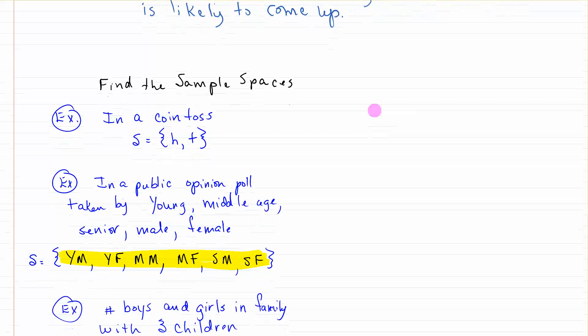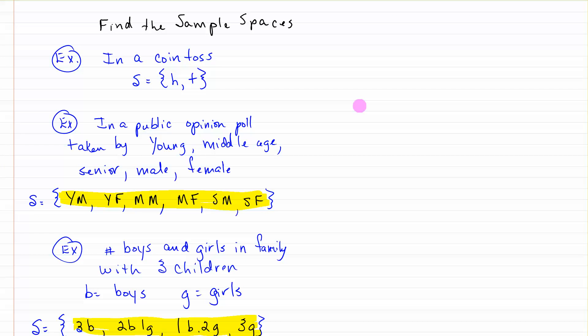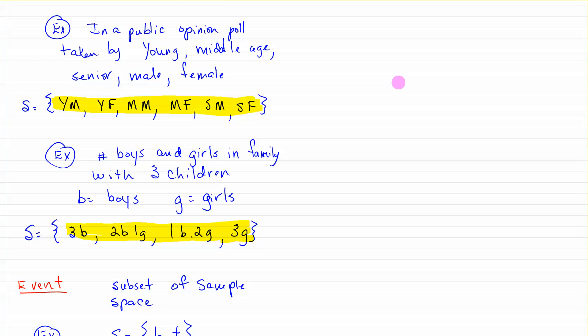Let's look at some sample spaces where we have to list what the sample space is. If you toss a coin, the sample space S would be what are your possible outcomes? Either you're gonna have heads or tails. Those are the only possibilities. In a public opinion poll taken by young, middle-aged, senior, male, female, the possibilities of the people giving answers could be young male, young female, middle-aged male, middle-aged female, senior male, senior female. Those are the only options in that sample space.